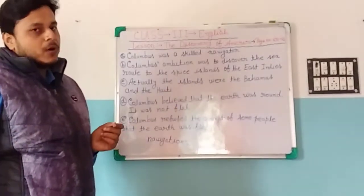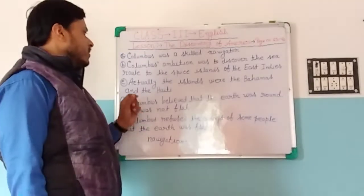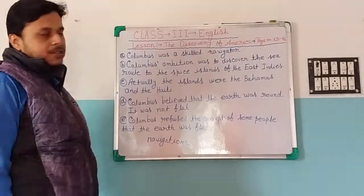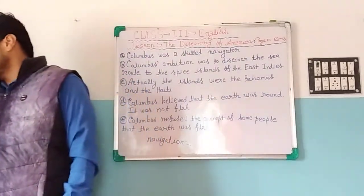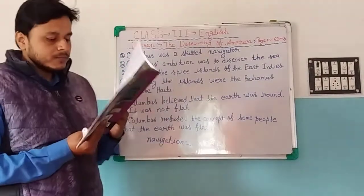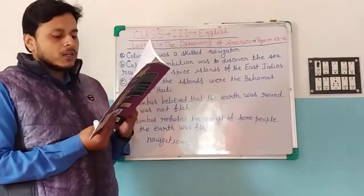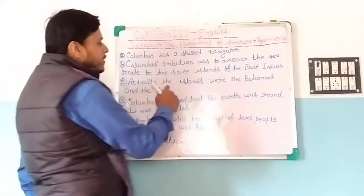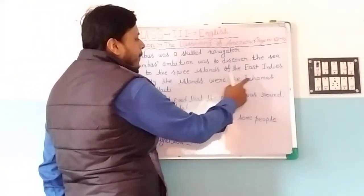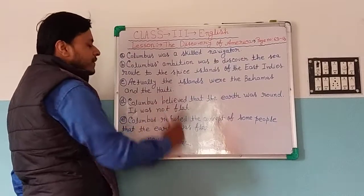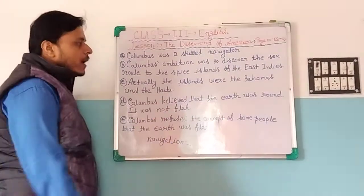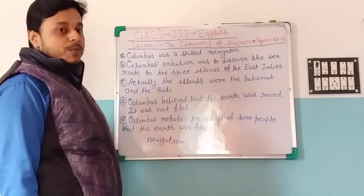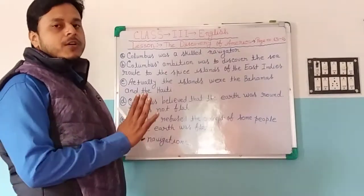How did Columbus discover the Spice Islands of the East Indies? That is the second question. Here is the third question: What were the islands actually? The islands were the Bahamas and Haiti. We discovered the Bahamas and Haiti before we reached America.